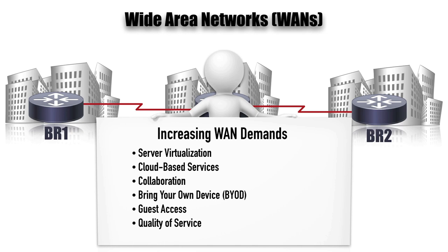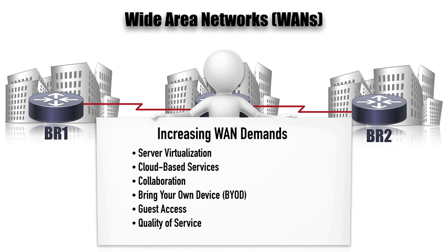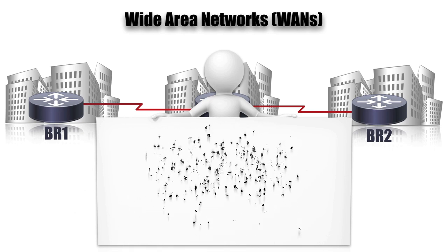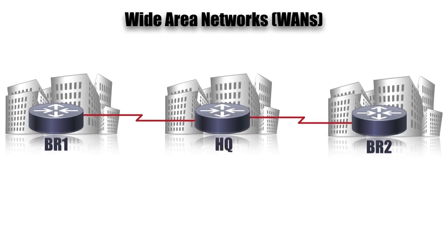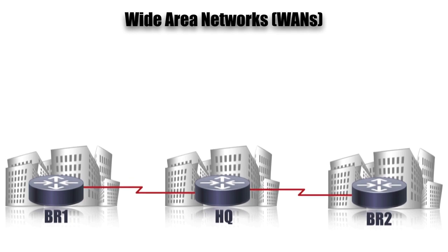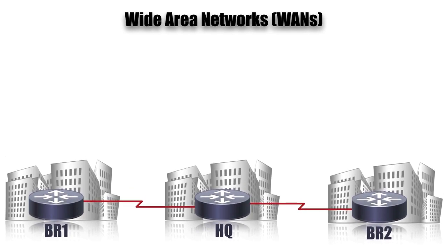When we have WAN connections and are adding applications, we might need to configure or reconfigure our quality of service policies. The WAN might also be used when branch offices are trying to get out to the internet. Let's look at a couple of examples of how they could do that.